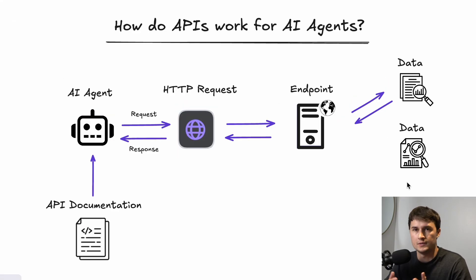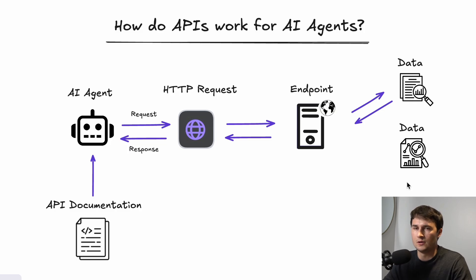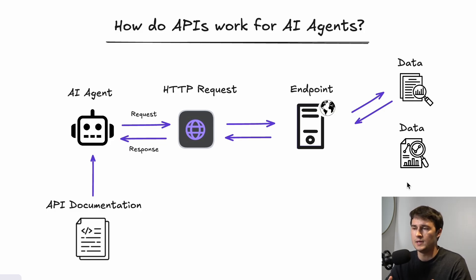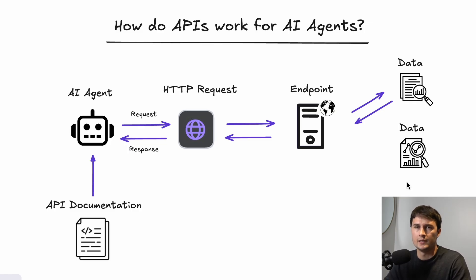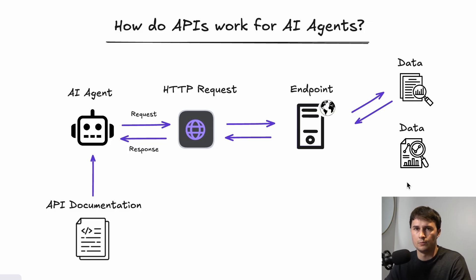How does this relate to APIs? This kitchen analogy is very similar to how APIs work for AI agents. AI agents, using the proper API documentation, are able to retrieve data from third-party services following a similar process. These APIs act as a bridge that connects AI agents to external data and services. Understanding the API documentation — like the menu — tells the AI agent what kind of requests it can make and what information it can expect back.